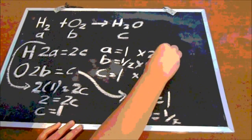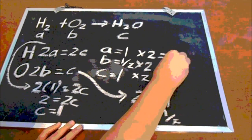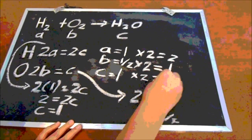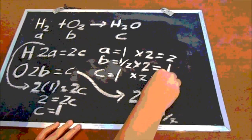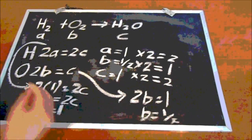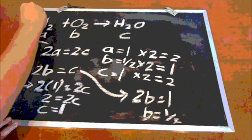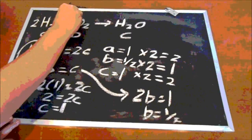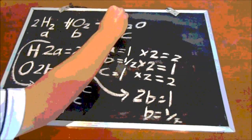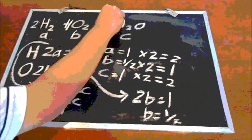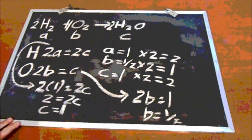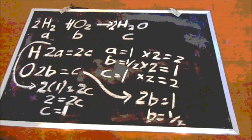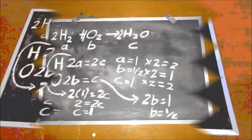So that A becomes 2, B becomes 1, and C becomes 2. And then we write down the equation. So it becomes 2H2 plus 1 O2 equals 2H2O. And now the equation is balanced.